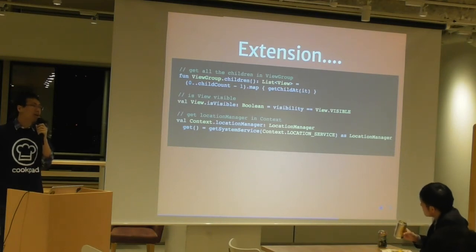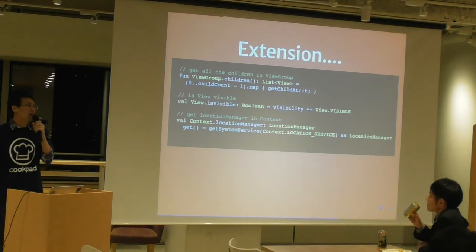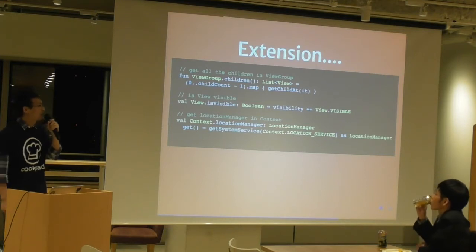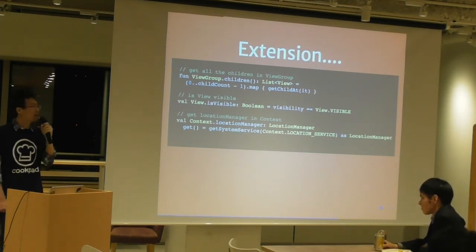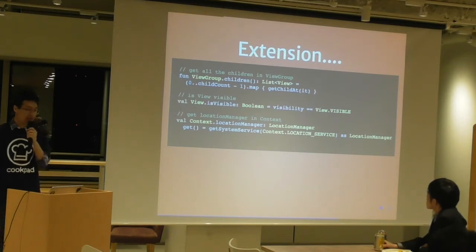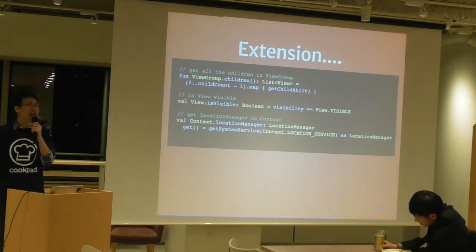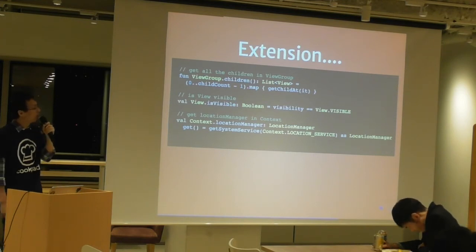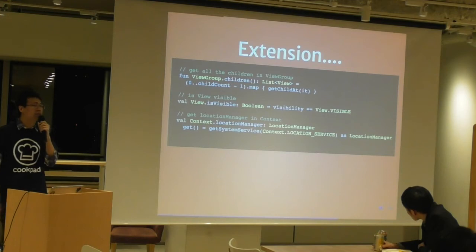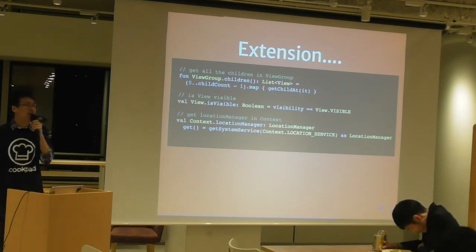Another one that gets used a lot is the LocationManager. In regular Android development you probably have to write 'getSystemService(Context.LOCATION_SERVICE)' and cast it. But in Kotlin you can annotate your Context class so that it gets one more property — 'locationManager' — and then you can use 'locationManager' right away in your code without casting all the time.